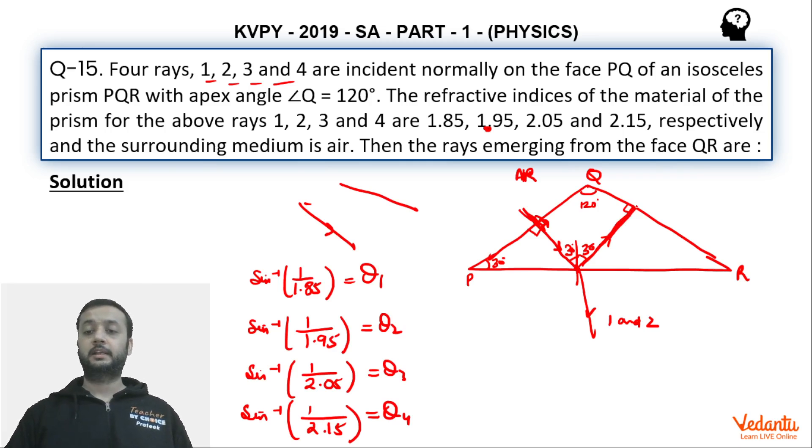Therefore ray 3rd and 4th are going to come out of the face QR. So 3 and 4 yaha se bahar jayegi. So I hope you would have understood this solution. So a tricky point over here was to realize that yeh jo ray enter kar rahi hai, yeh QR face pe strike nahi karengi pehle, they are going to strike at the face PR first. This was a tricky point. So I hope you would have understood, that's it, thank you.